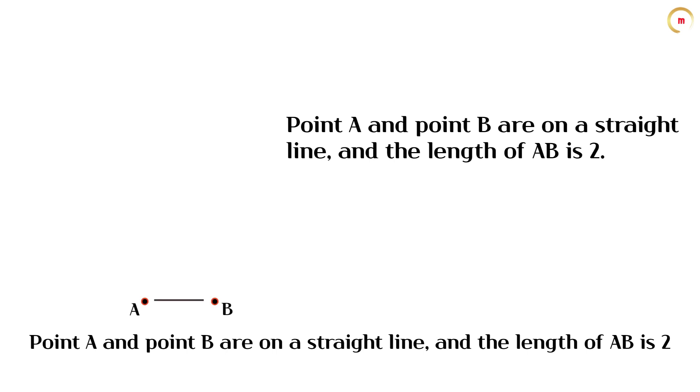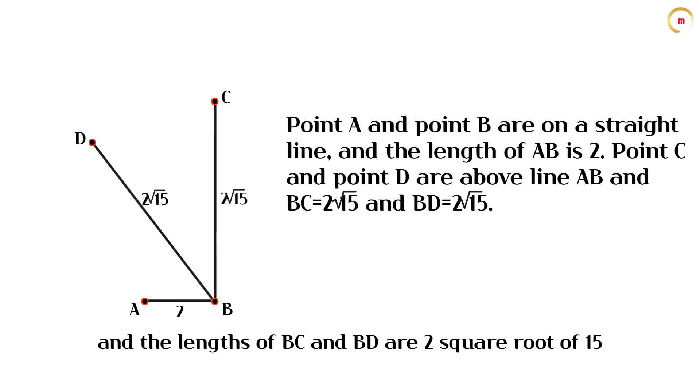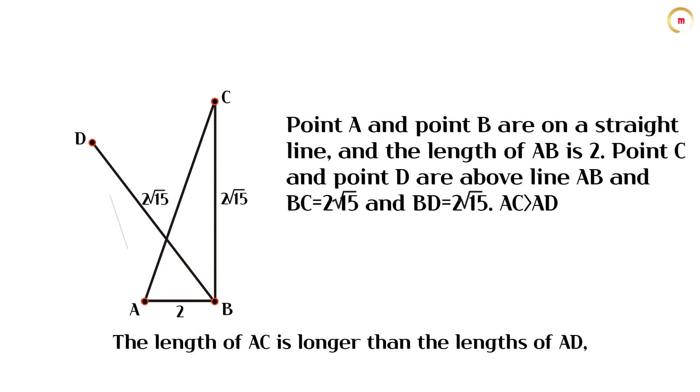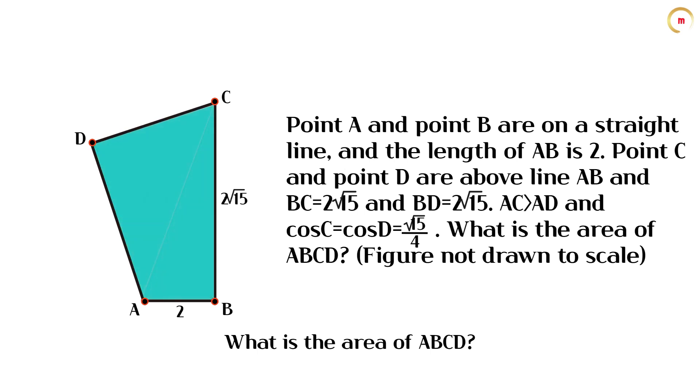Point A and point B are on a straight line, and the length of AB is 2. Point C and point D are above line AB, and the lengths of BC and BD are 2 square root of 15. The length of AC is longer than the length of AD, and cosine C and cosine D are the square root of 15 over 4. What is the area of ABCD?